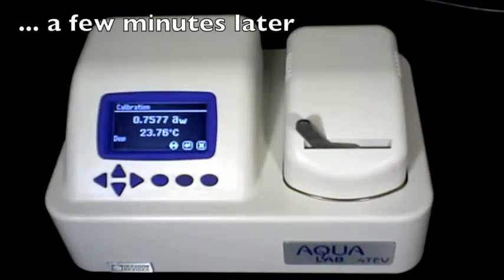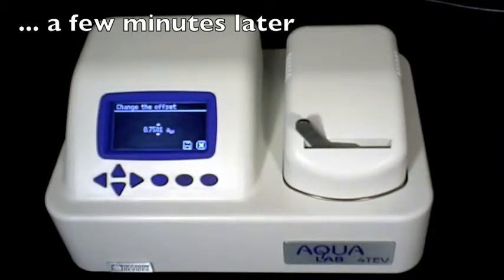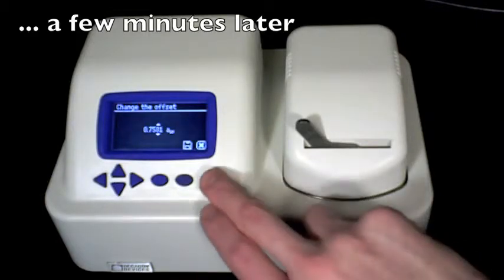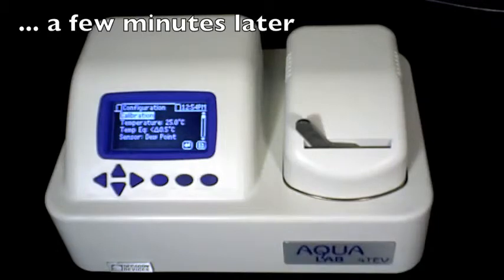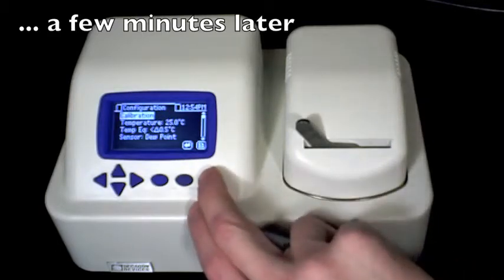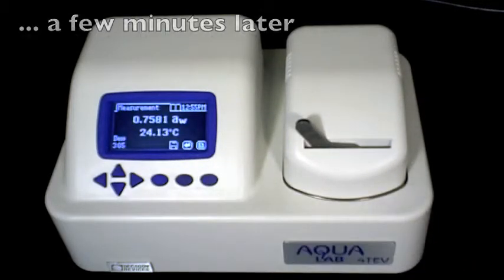After your final reading is displayed, make any necessary adjustments using the up or down keys below the Aqualab display. Please note that if your water activity value is within 0.03 of the standard, no adjustments are necessary. Simply hit the X button, and return to the measurement screen, and begin making water activity readings on your product.